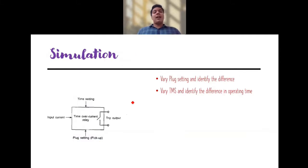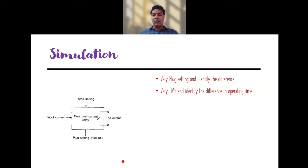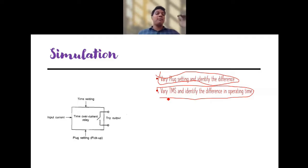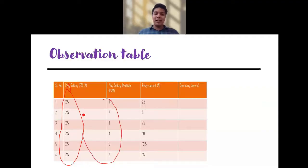In the simulation, we will vary the plug setting multiplier and see the difference, and also vary the TMS to identify the difference in operating time. Our concentration will mainly be on TMS variation rather than plug setting. Plug setting of 3 ampere means the relay operates above 3 ampere current; at 5 ampere it operates above 5 ampere. For IDMT characteristics, in the observation we will stick with one plug setting of 2.5 ampere due to the limitation in the virtual lab platform.